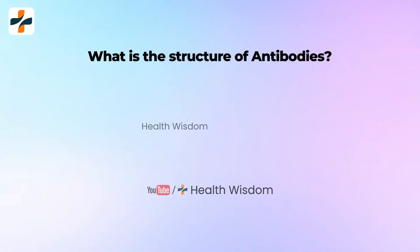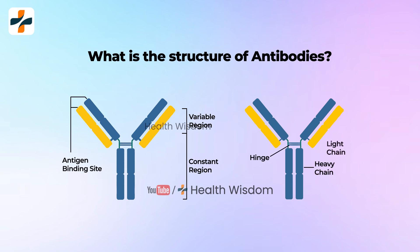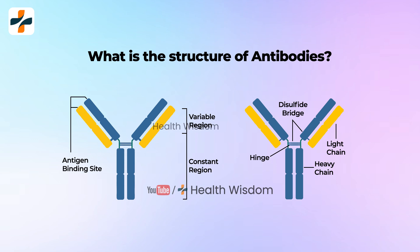What is the structure of antibodies? Each antibody structure consists of two heavy chains and two light chains, which join to form a Y-shaped molecule. Each type of antibody has a different amino acid sequence at the tips of the Y, which is why each antibody is shaped differently.